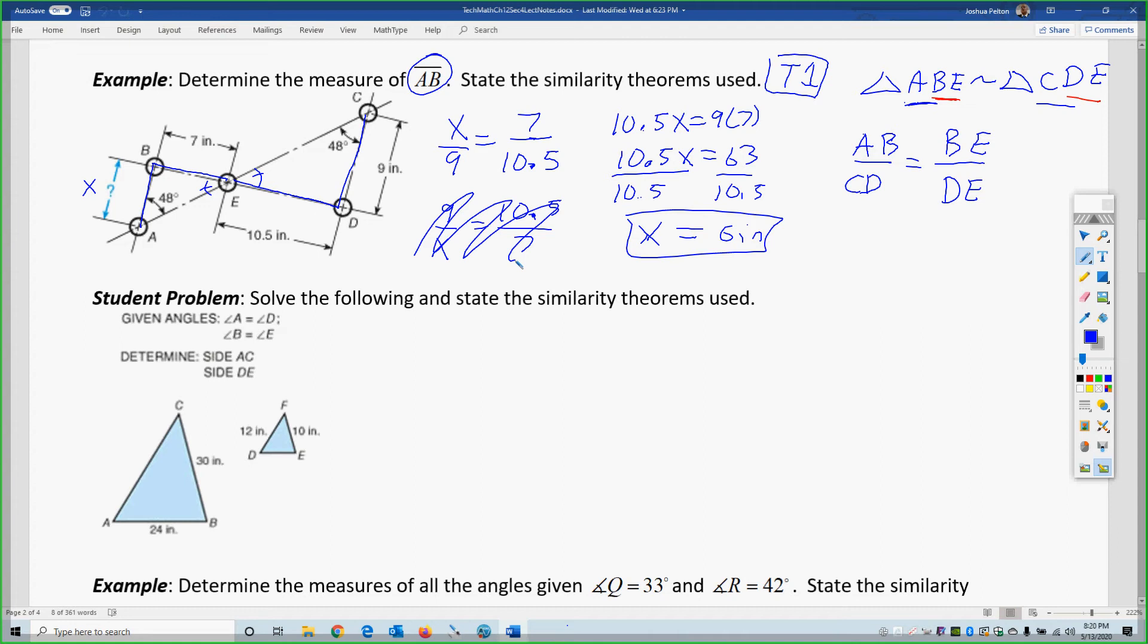Pause the video. Try the student problem for yourself. So if you look at the student problem, it said that A corresponds to D. They're equal. And B corresponds to E. They're equal. So that is another theorem 1.